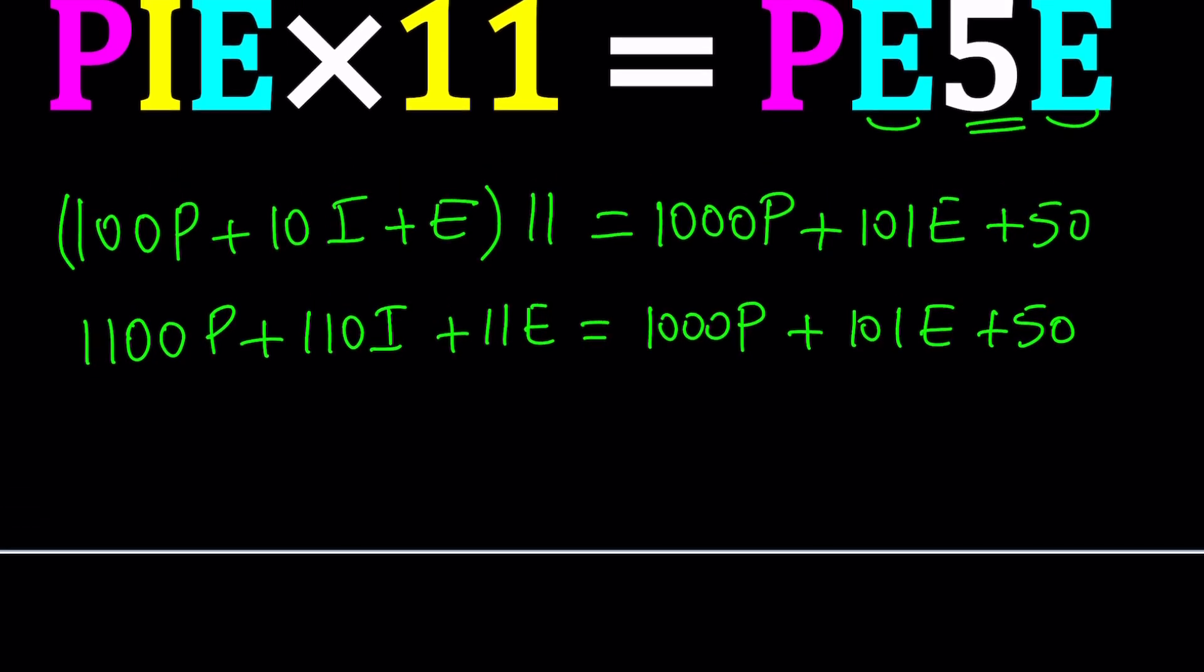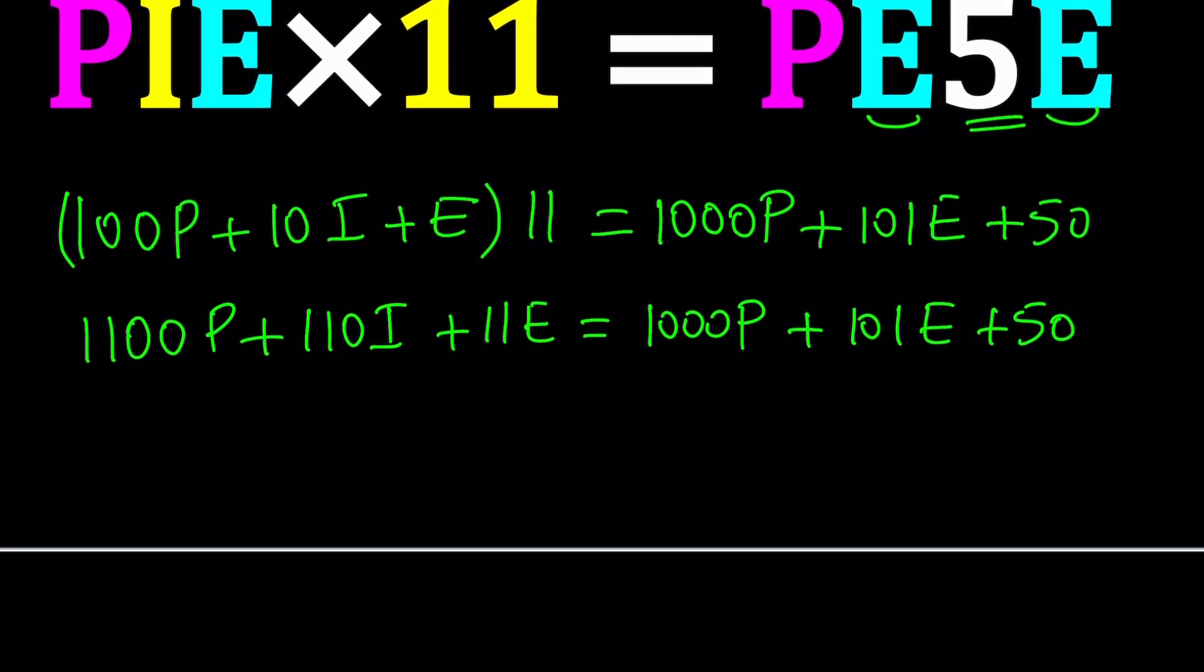Let's put it together in a meaningful way. Maybe I can bring the 1000P over here to the left, that will give me 100P left over. Then I have 110I, I'll probably keep it there because I want to keep everything positive. And then maybe put the E on the right-hand side, and that'll be 101 minus 11, which is 90E plus 50.